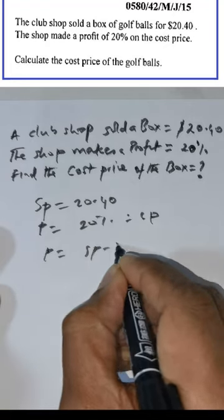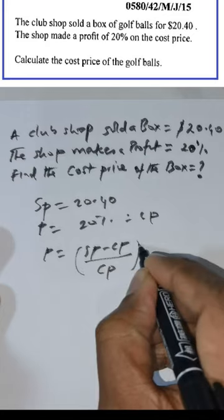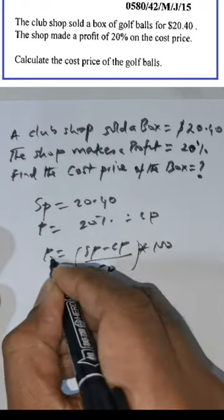Now profit is equal to selling price minus cost price divided by cost price. This would give us the value that we are looking for.